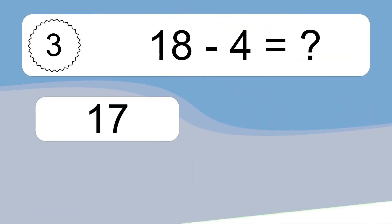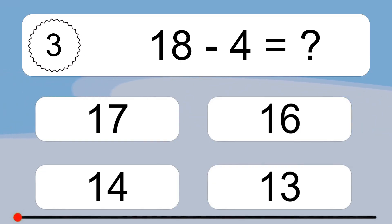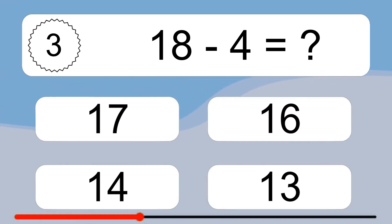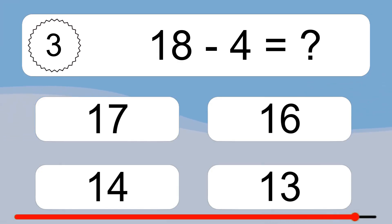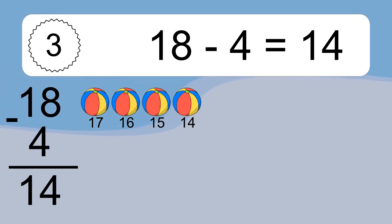18 minus 4 equals what? 18 minus 4 equals 14. Let's count it. 17, 16, 15, 14.